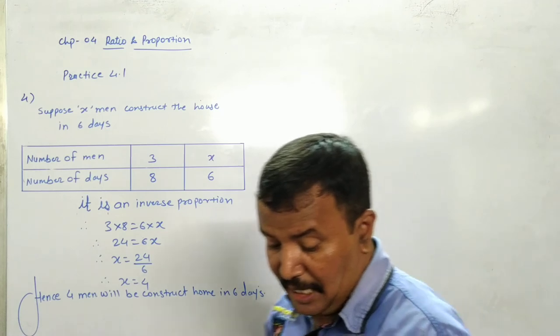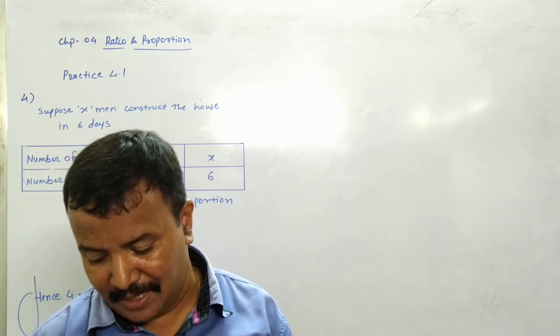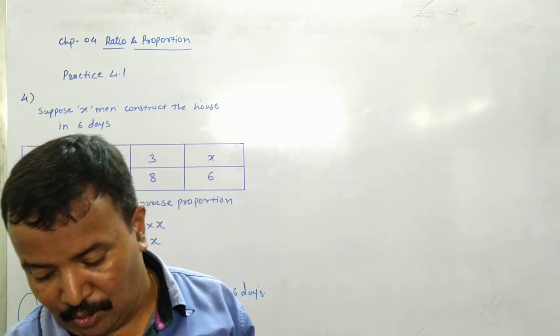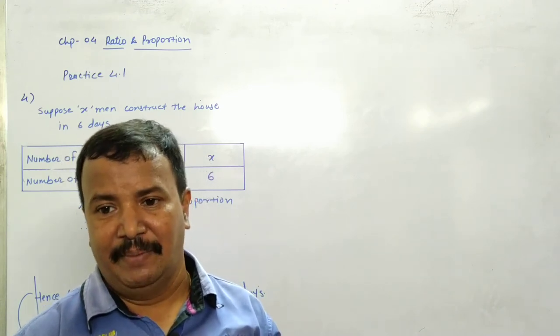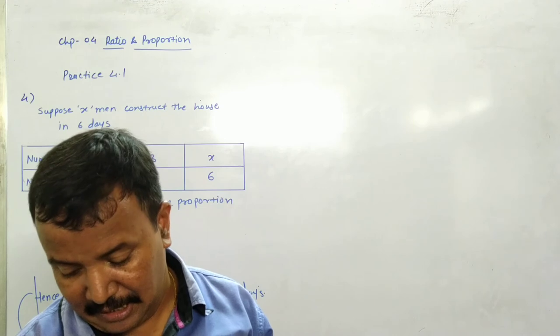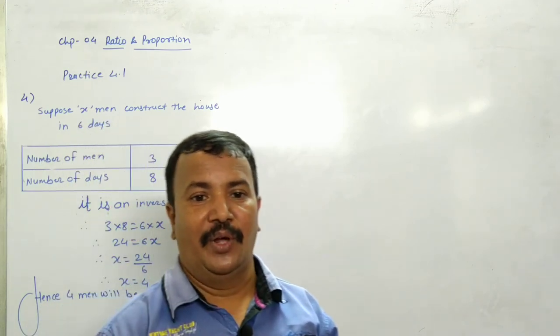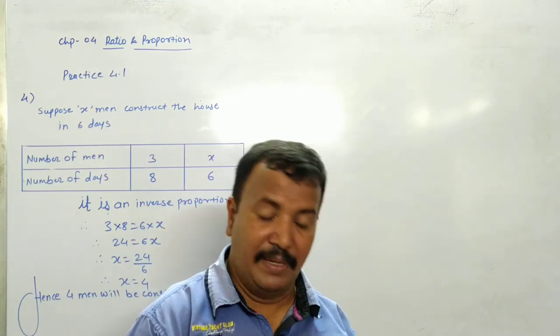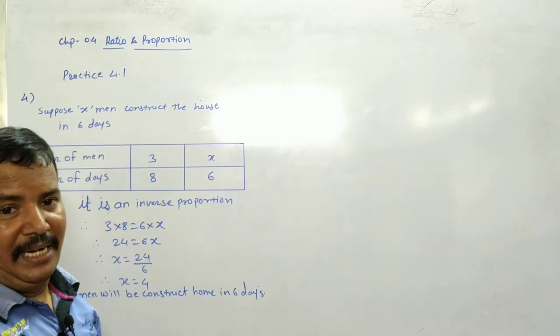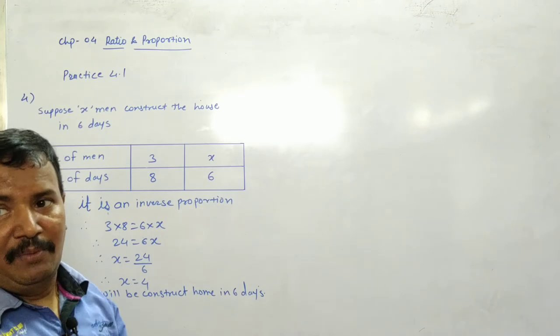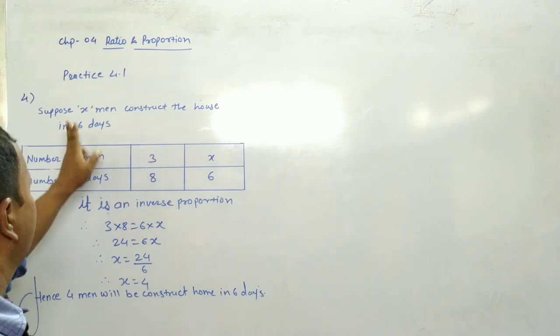Next question is. 3 persons can build a small house in 8 days. To build the same house in 6 days. How many persons are required? 3 persons can build a small house in 8 days. But I have to complete the house in 6 days. I have 3 people. 3 people say it will take 8 days. But I don't have 8 days. I need it in 6 days.